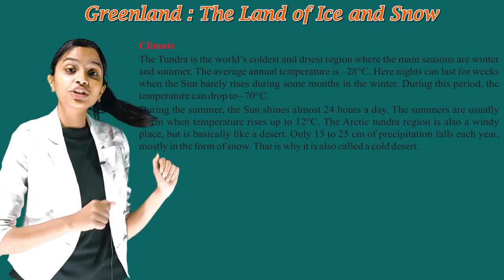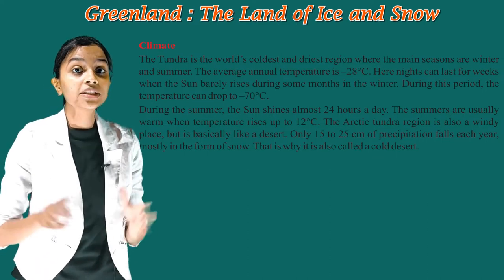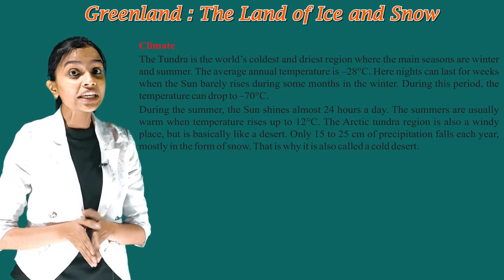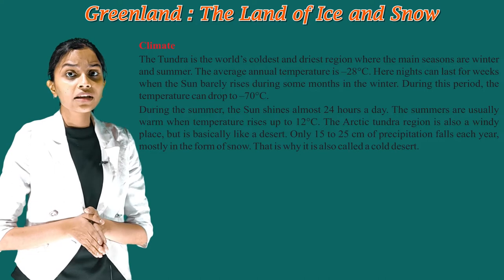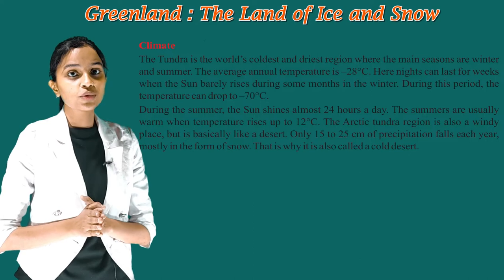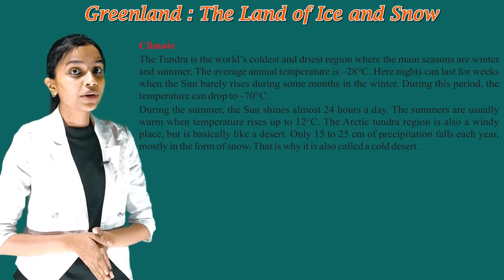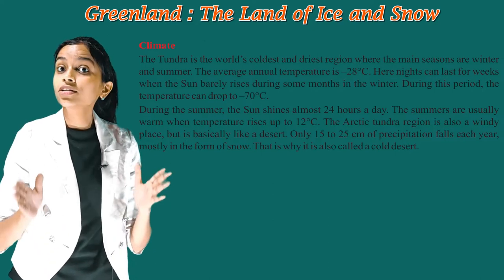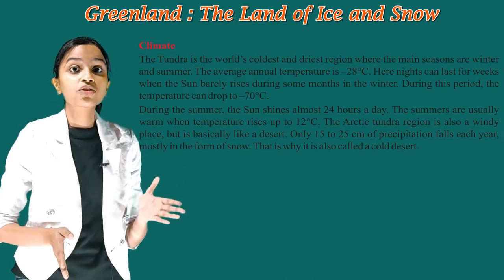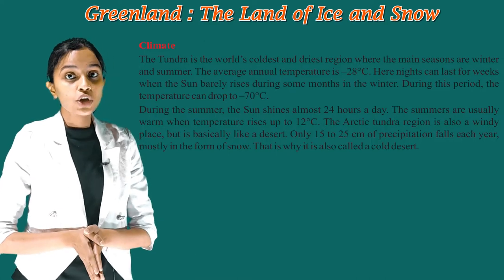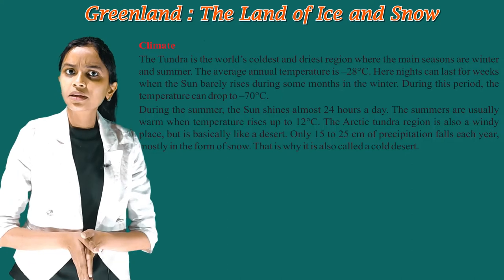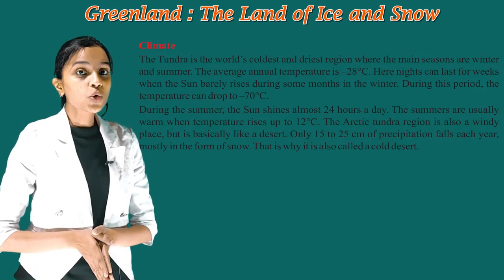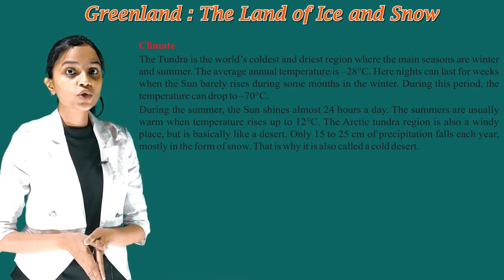Now let's see the climate of the Tundra region. The Tundra is the world's coldest and driest region, where the main seasons are winter and summer. The average annual temperature is minus 28 degrees Celsius. Here, nights can last for weeks when the sun barely rises during some months in winter. During this period, the temperature can drop to minus 70 degrees Celsius. During the summer, the sun shines almost 24 hours a day. Summers are usually warm when temperature rises up to 12 degrees Celsius. The Arctic Tundra region is also a windy place, but is basically like a desert. Only 15 to 25 centimeters of precipitation falls each year, mostly in the form of snow. That is why it is also called a cold desert.